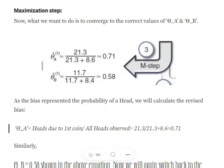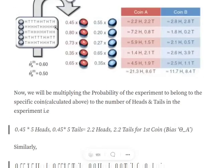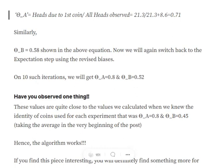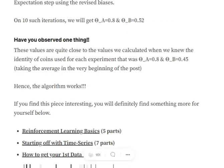In the maximization step, we update theta_a and theta_b. Earlier we had theta_a = 0.6 and theta_b = 0.5; now they are updated to 0.71 and 0.58. This iteration continues — we can run multiple iterations until the values converge. It has been observed that eventually we get theta_a ≈ 0.8 and theta_b ≈ 0.45, matching our initial known-label calculation. This demonstrates how Expectation Maximization estimates latent variables — here, the coin biases — without knowing which experiment belongs to which coin.